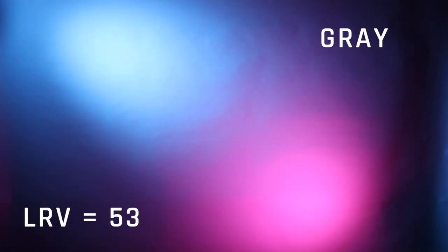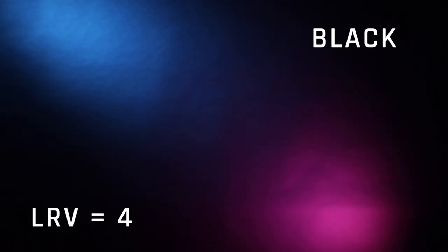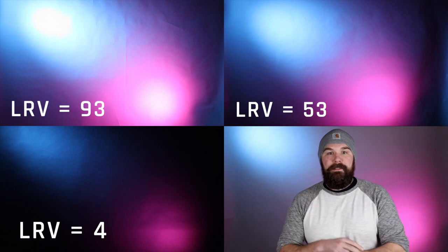Number two is the gray backdrop, which has an LRV of 53. You can still tell the light is hitting it, but a lot of it is getting absorbed — a decent amount bounces back, but you don't see those blown-out white areas like with the white backdrop. Third is the black background, which has an LRV of 4, and you can really tell how much light is being absorbed. Comparing all three together on screen, you can clearly see the difference those three LRVs make. It's a controlled studio setting, but it's a good way to illustrate the difference LRVs can create.